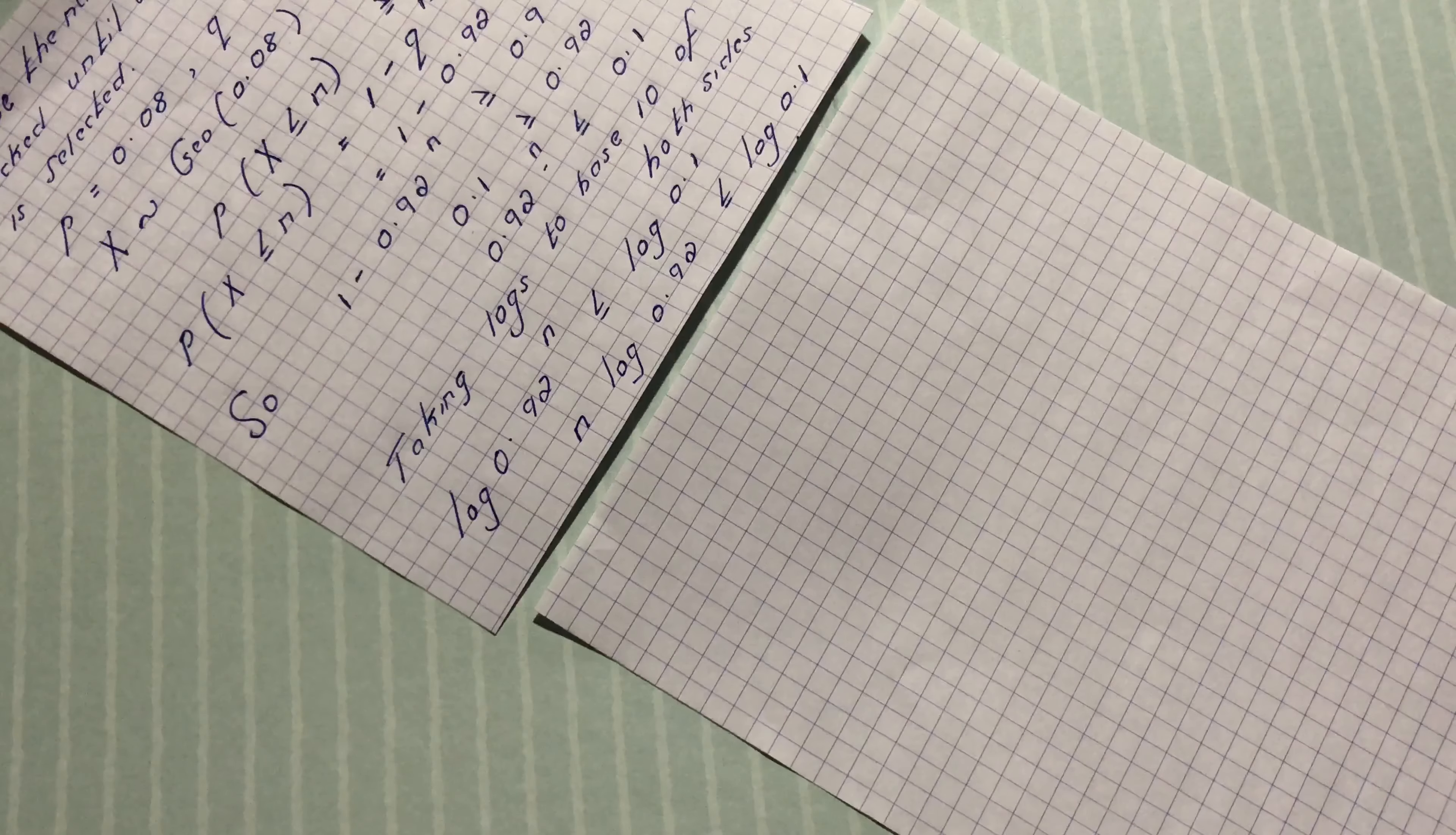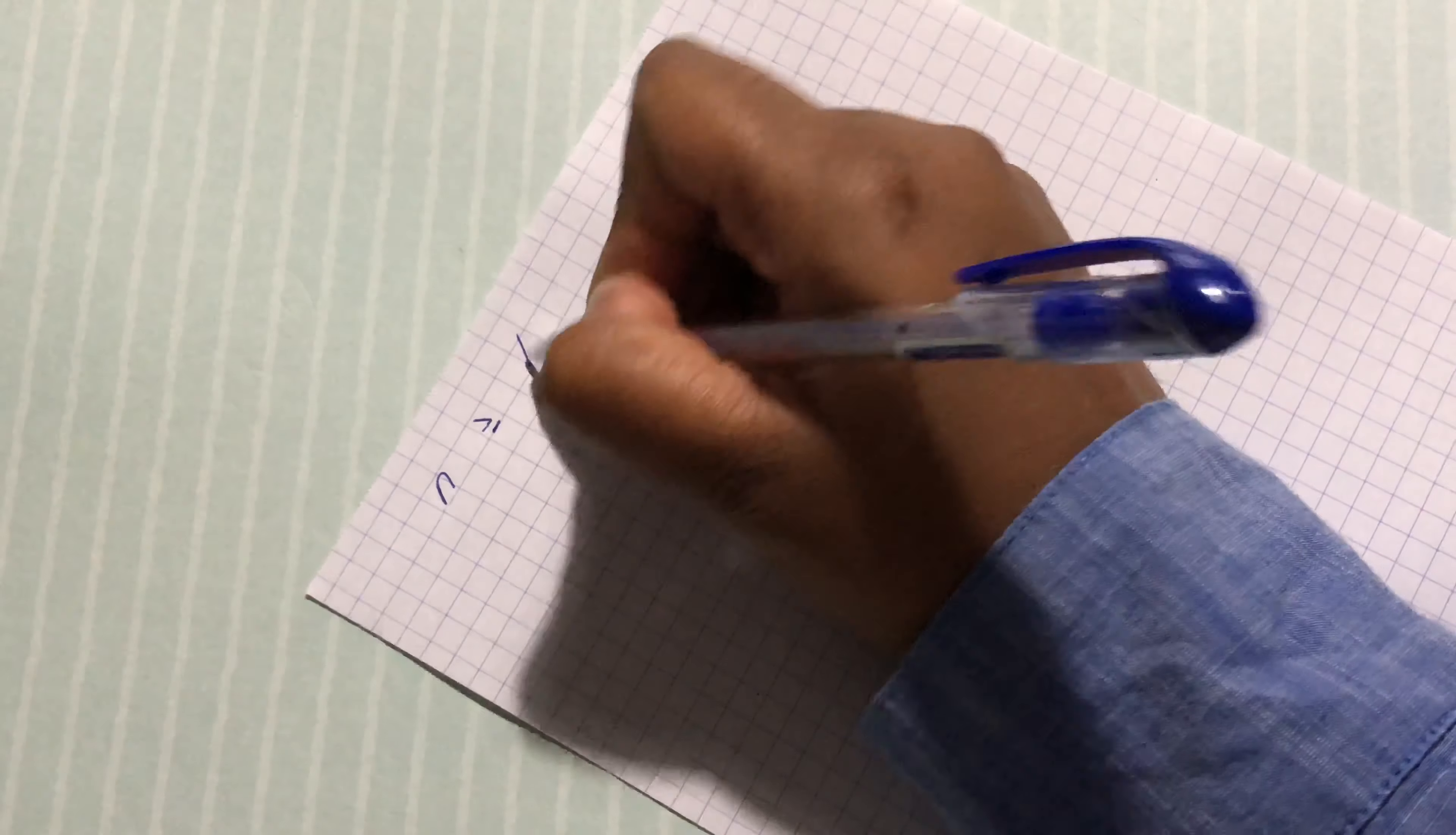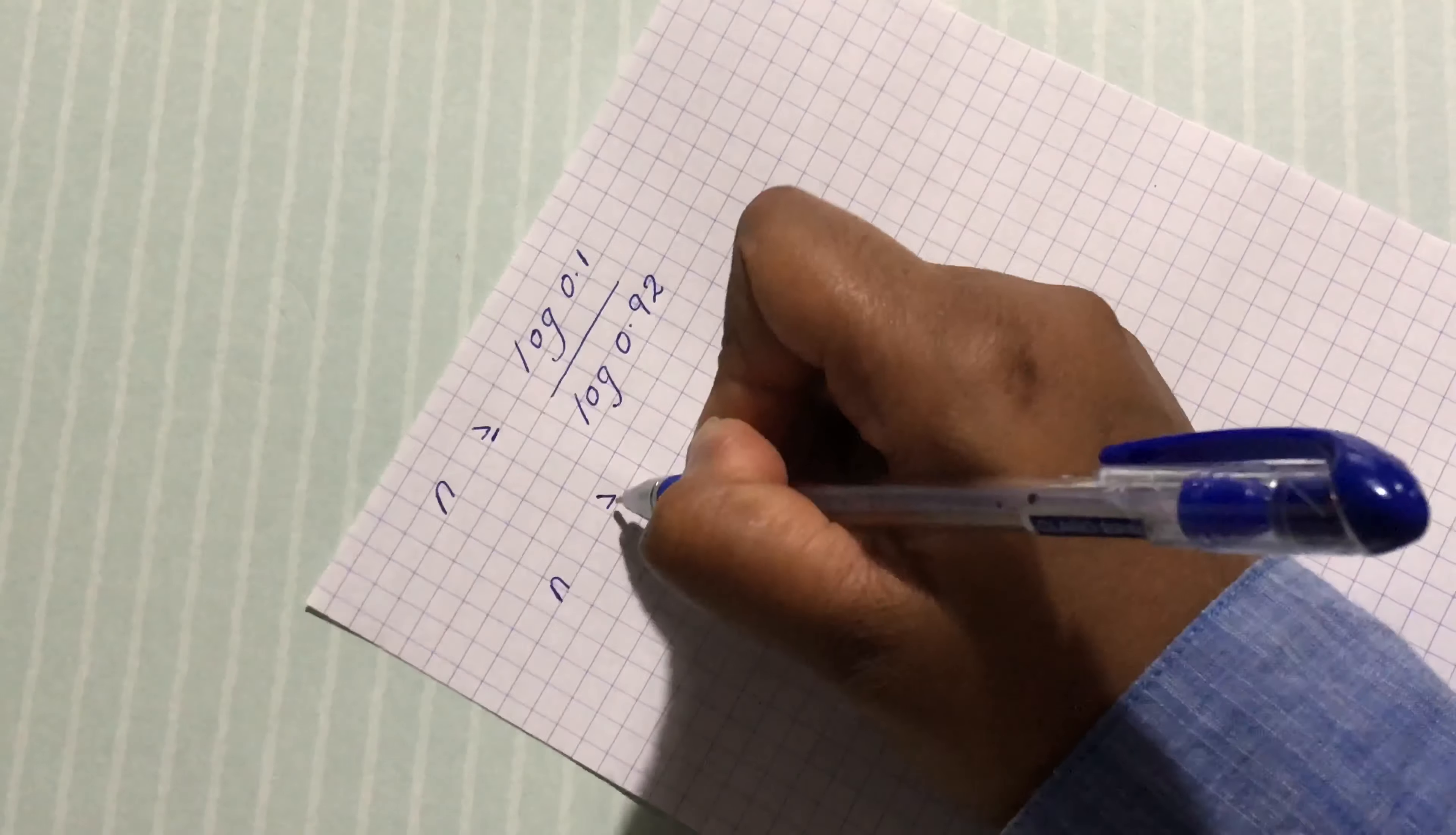We have n log 0.92 less or equal to log of 0.1. So making n subject of formula we have n greater or equal to log of 0.1 divided by log of 0.92. We have n is greater or equal to